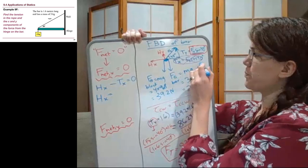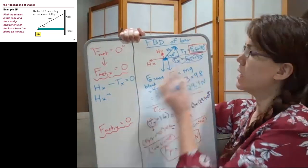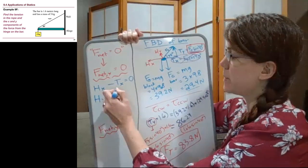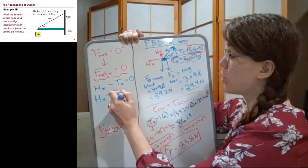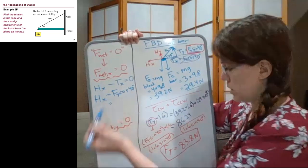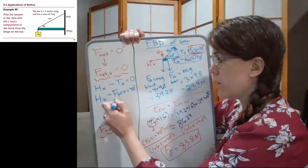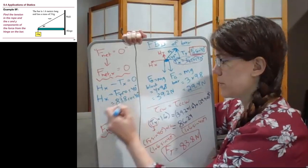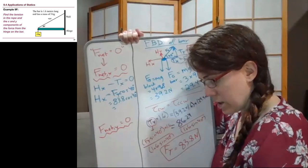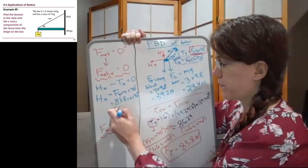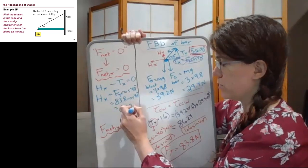So the x component of the hinge force, I'm going to add tx to both sides, is equal to, and the x component of the tension is going to be tension times the cosine of 40 degrees. The full tension times the cosine of 40 degrees. So we have this 83.8 cosine 40 degrees. And so we get, as our result, 64.2 newtons.